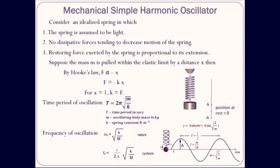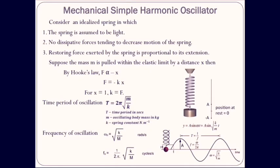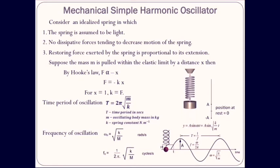The restoring force F is directly proportional to displacement but in the opposite direction, so F is proportional to minus x. Introducing proportionality constant k, the equation becomes F equals minus kx. If x equals 1, then k equals the magnitude of F. The force constant is defined as the magnitude of the applied force that produces unit extension or compression in the spring while loaded within the elastic limit.